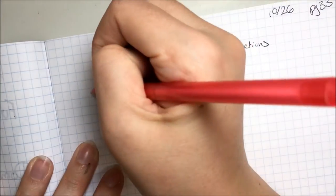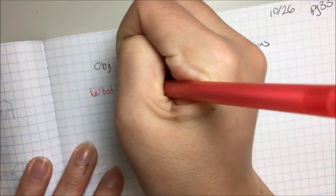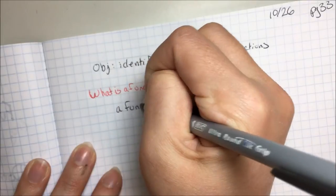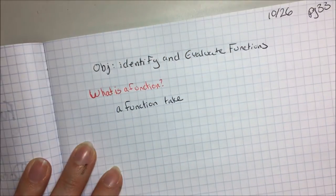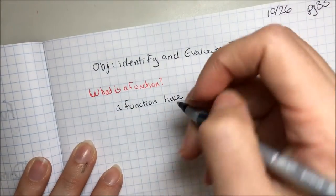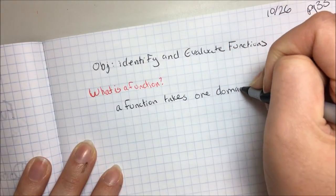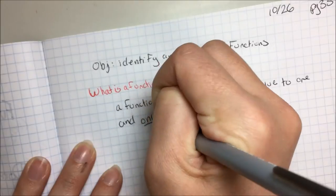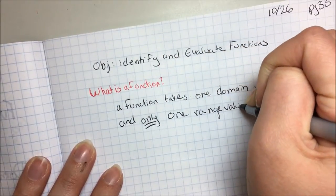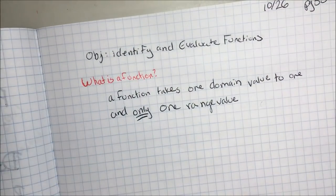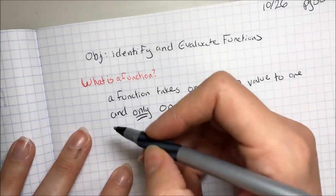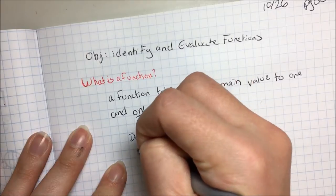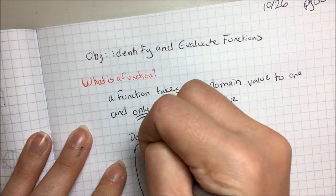So what is a function? A function takes one domain value to one and only one range value. One of the ways we can represent a function is by looking at what's called a mapping. So if I have a set of numbers in my domain, let's say I have 1,